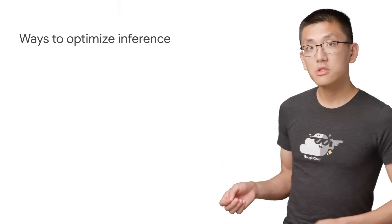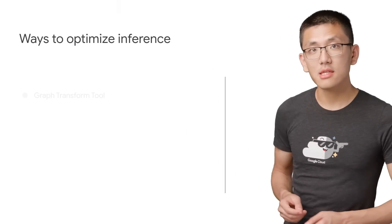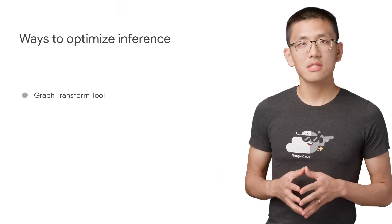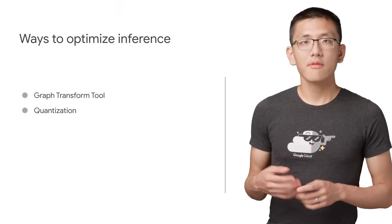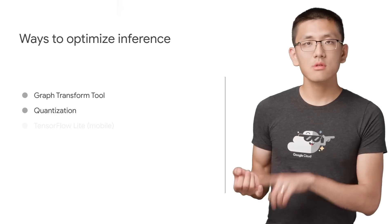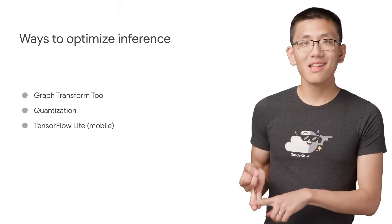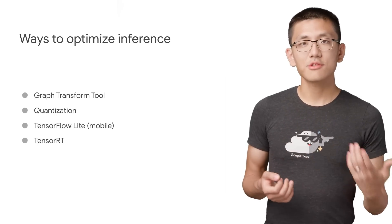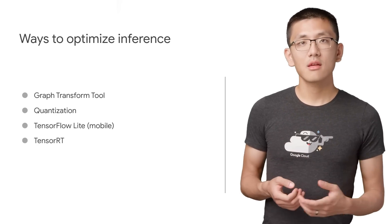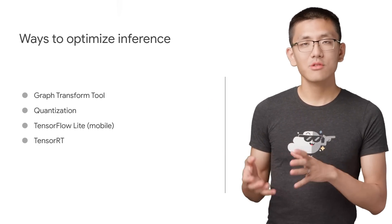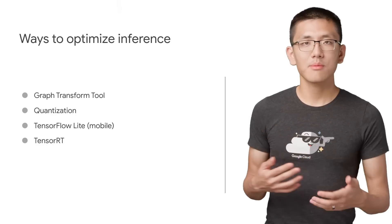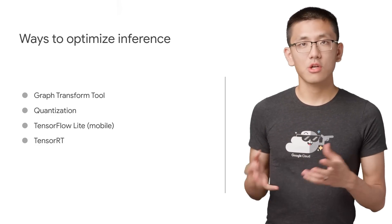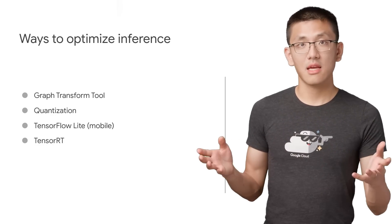Turning now to the prediction side of things, there are a number of optimizations that are worth exploring. The graph transform tool and TF Lite allow you to optimize your model for serving speed, and there is even a guide for how to properly optimize the batching of your prediction calls. So that's handy.